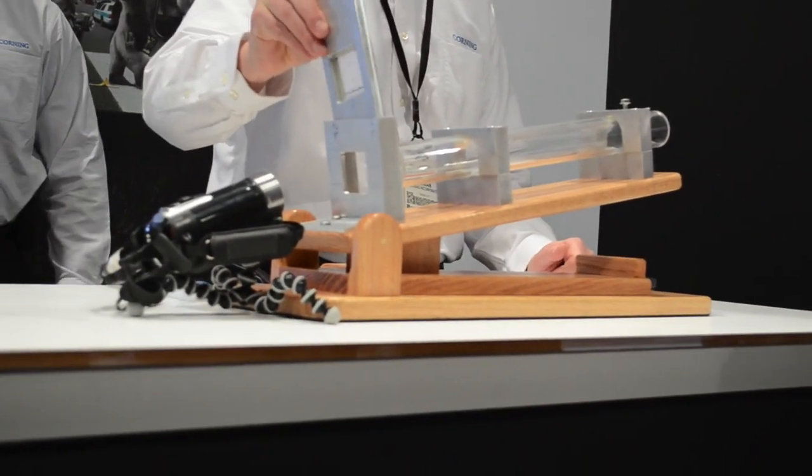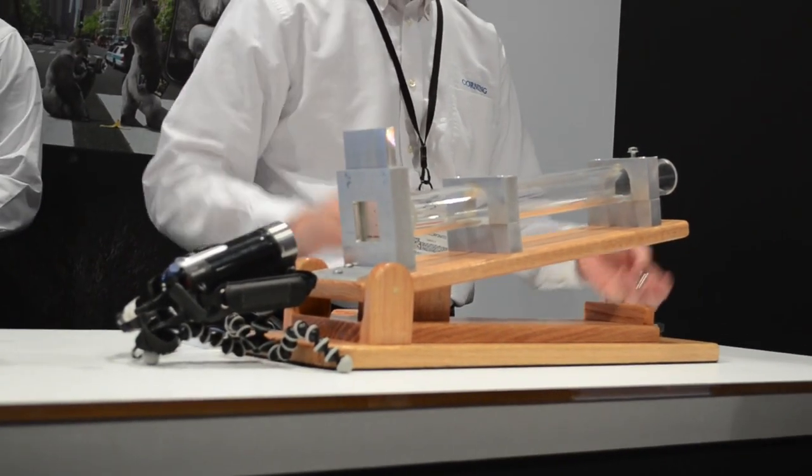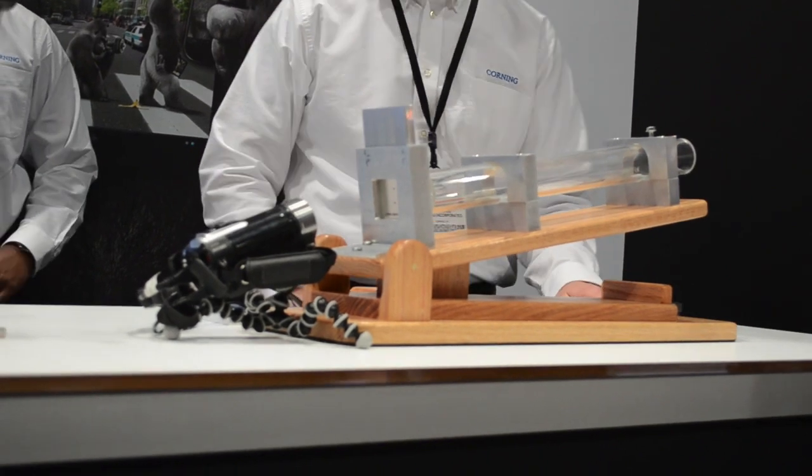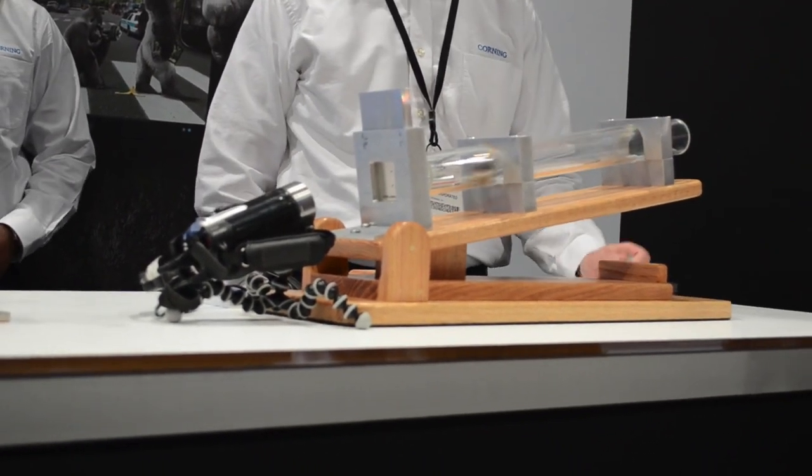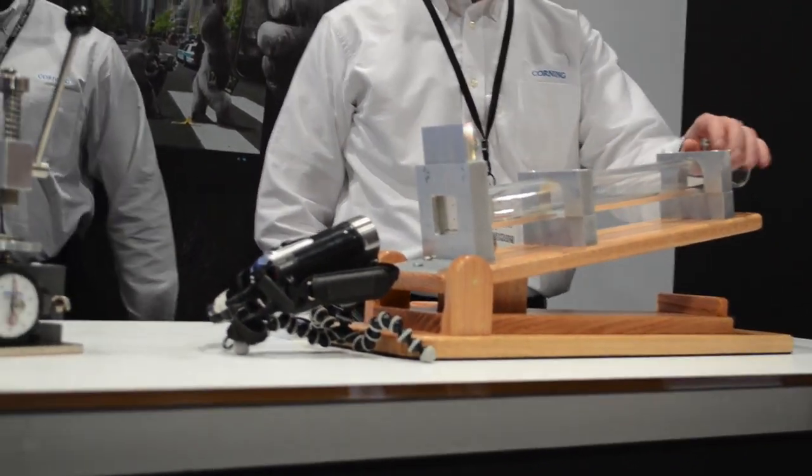As you guys can see in the video right here, he is actually taking a regular piece of glass and the little ball bearing is hitting into it and shattering the glass. But then takes Gorilla Glass 3, puts it in the same position and lets the ball bearing hit it and nothing happens at all.